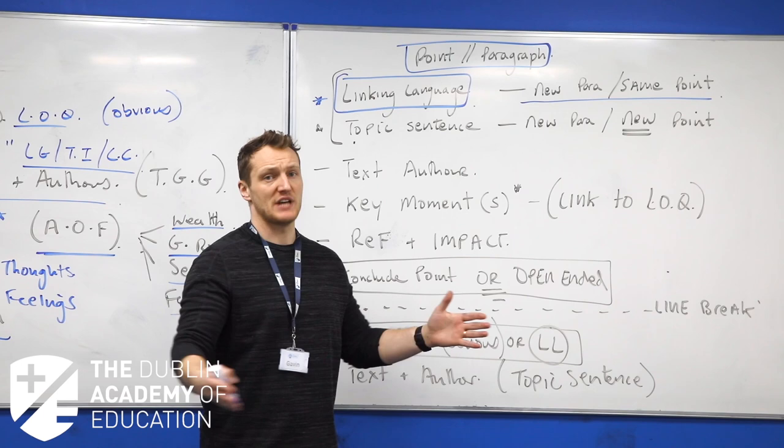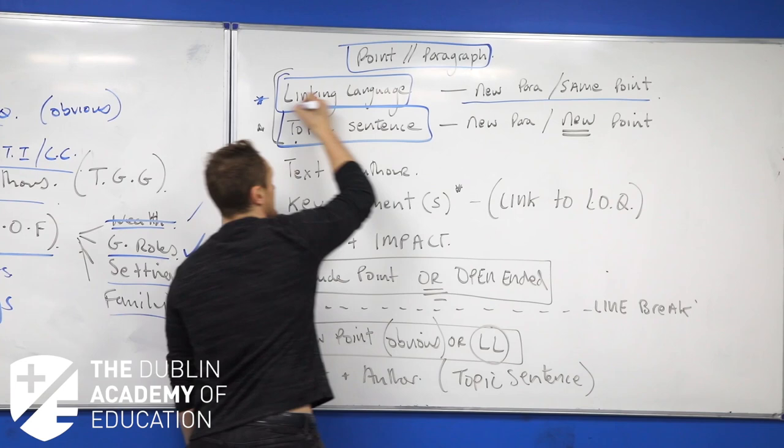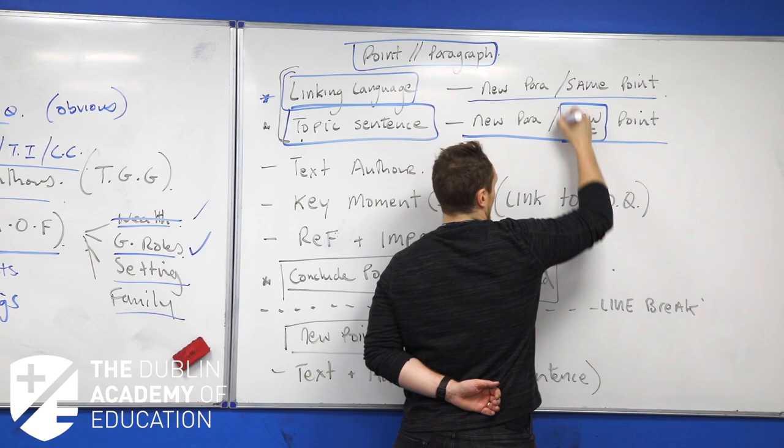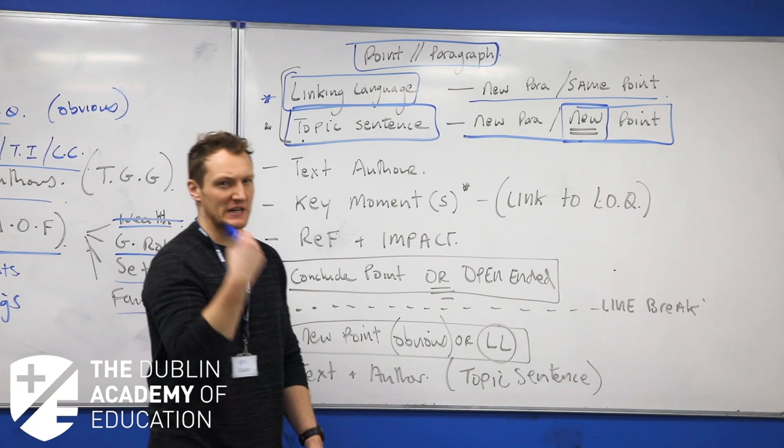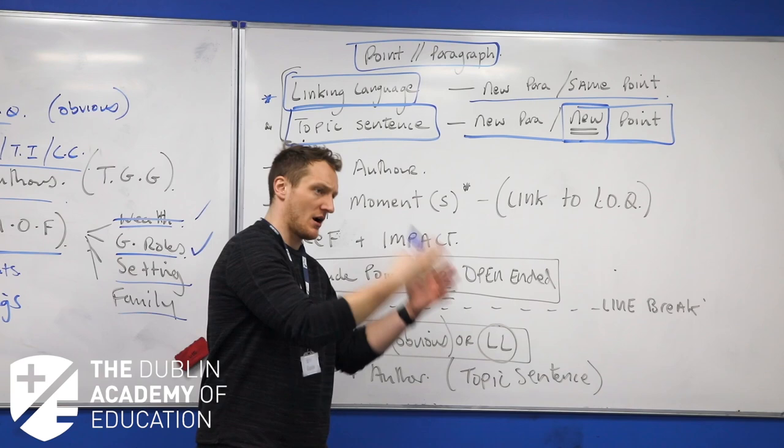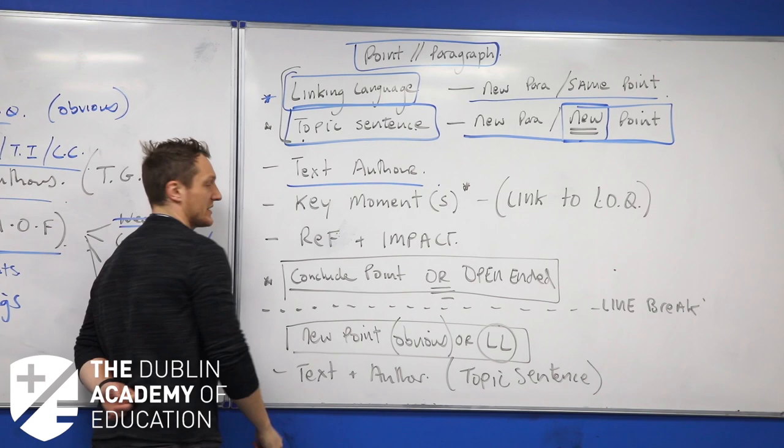If it is a new paragraph and a completely new point - you've dealt with your area of focus, you've dealt with wealth for example, that's complete and you're now moving on to gender roles - well then it's a topic sentence that we begin with. That means it's a new paragraph and, as you can see there I've underlined it, a new point in and of itself. Then we include topic sentences like 'gender roles also play a significant factor in determining our characters' or 'play a significant factor in the cultural context of all three of my texts,' something along those lines as a little topic sentence.